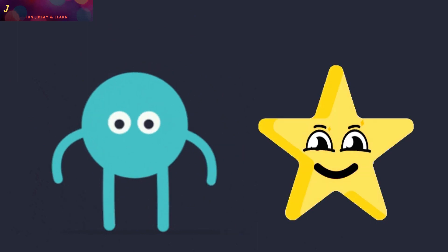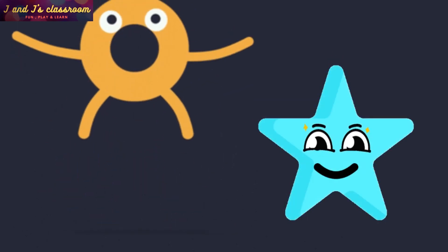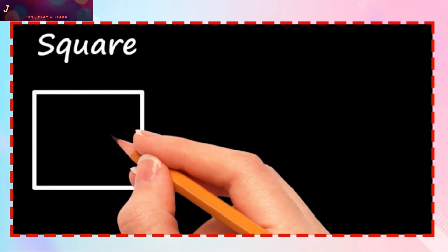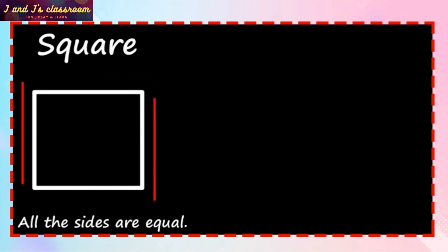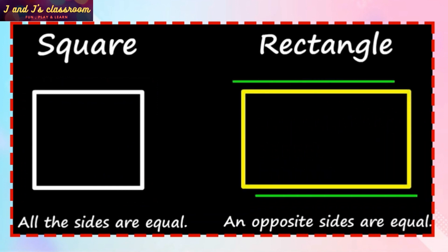Do you know children, in square all the sides are equal. But in rectangle, the opposite sides are equal.